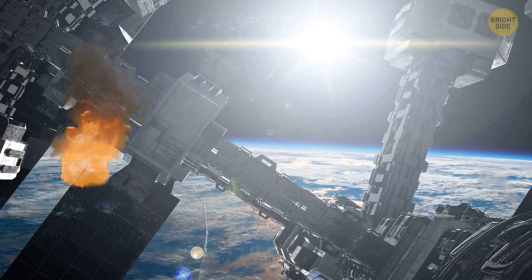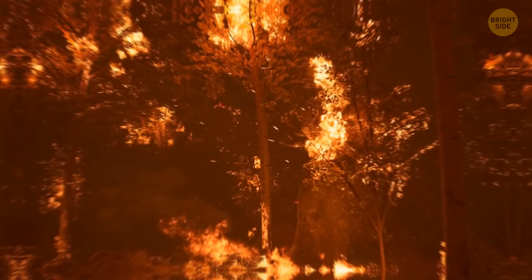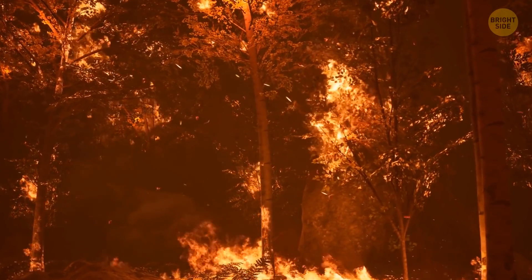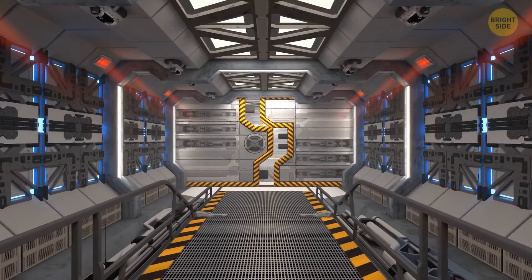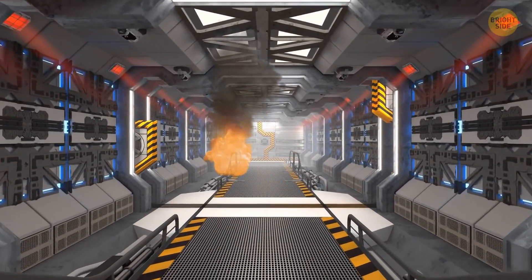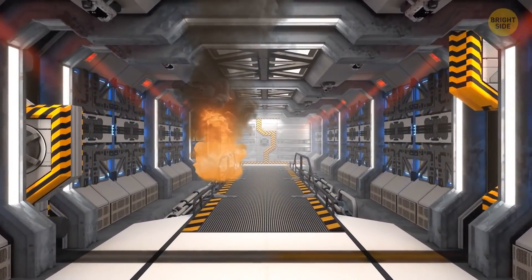Speaking of burning, there's one thing fire can't do in space. Fire can spread when there's a flow of oxygen, and since there's not any in space, if the fire breaks out in a rocket, you can simply turn off the ventilation system, and voila!